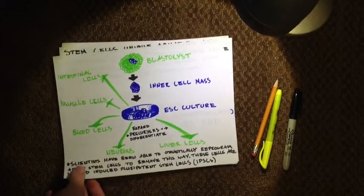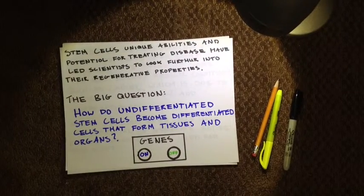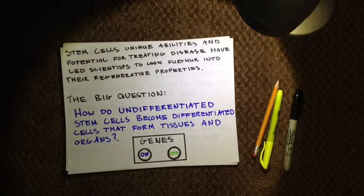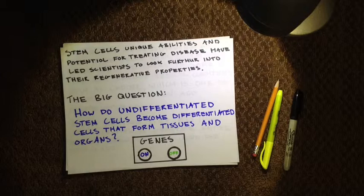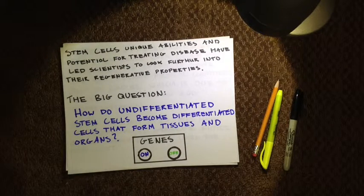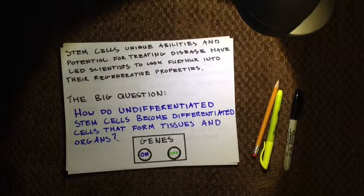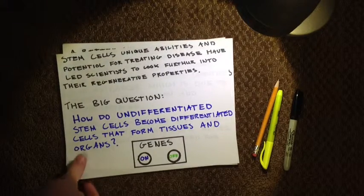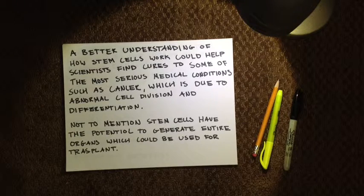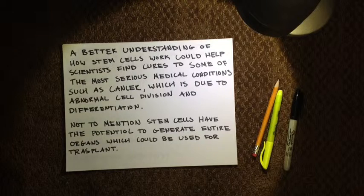Stem cells' unique abilities and potential for treating disease have led scientists to look further into their regenerative properties. The big question is: how do undifferentiated stem cells become differentiated cells that form tissues and organs? Scientists believe it has something to do with turning genes on and off during the differentiation process, but they're not sure exactly how it's done. A better understanding of how stem cells work could help scientists find cures to some of the most serious medical conditions, such as cancer, which is due to abnormal cell division and differentiation.